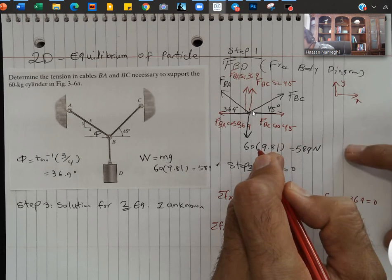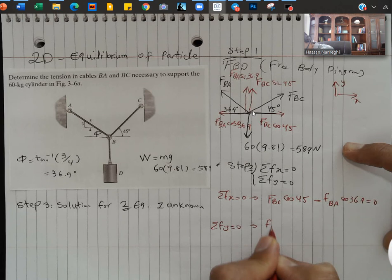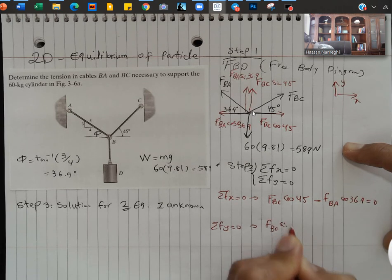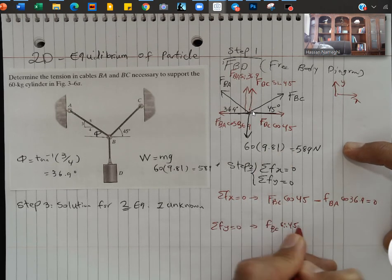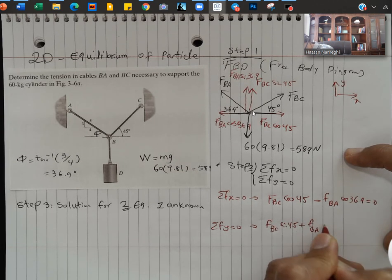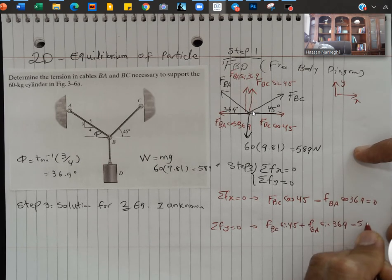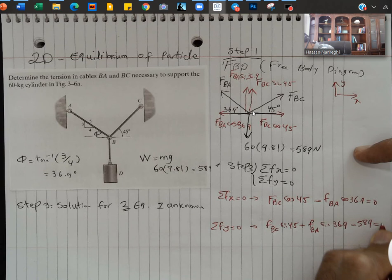On the Y, I have these two forces pointing up and then 589 pointing down. So I'm going to say FBC sine 45 going up, plus FBA sine 36.9 going up, and then minus 589 which is going down.